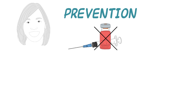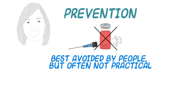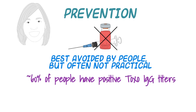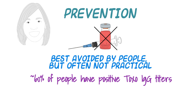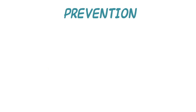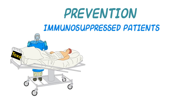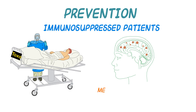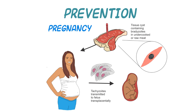Obviously, as a zoonosis, it is a disease best avoided. But in some parts of the world, this seems quite difficult — as many as 60% of the human population has positive IgG titers. Where the concern really lies is with immunosuppressed individuals, as reduction of immunity can lead to the release of tachyzoites from tissue cysts. If such cysts are in the brain, meningoencephalitis can occur. If a similar process occurs in a pregnant woman, tachyzoites can move across the placenta and cause birth defects in the baby.